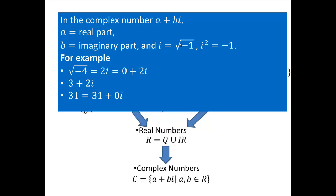We can use i for square root of negative 4, for example, which can be written as 2i because square root of 4 is 2. So all negative square roots can be written using the letter i. The i is not a variable, but we use it to represent an imaginary number — i is a number, it's a complex imaginary number. In the number 3 plus 2i, 3 is the real part and 2 is the imaginary part.